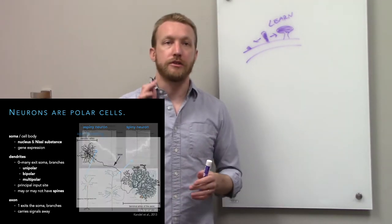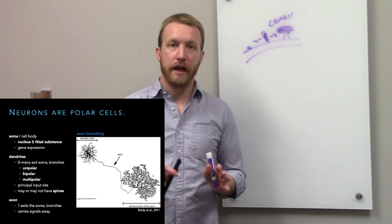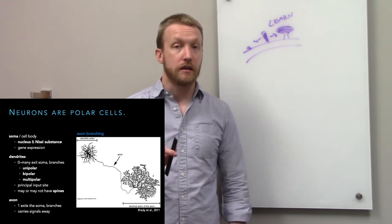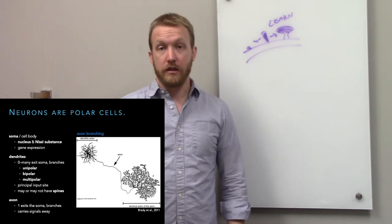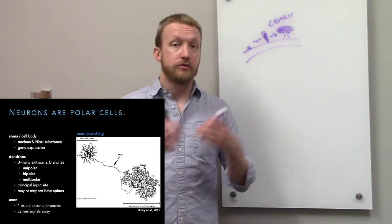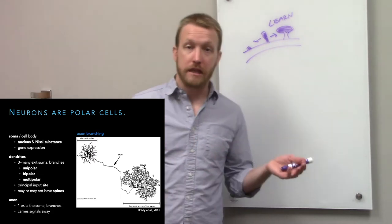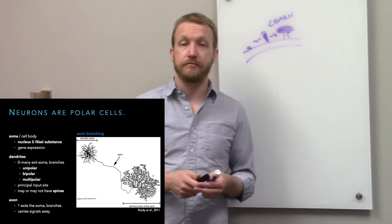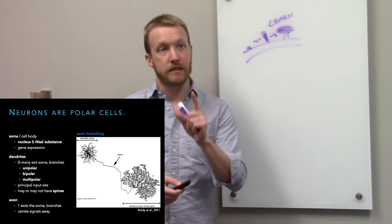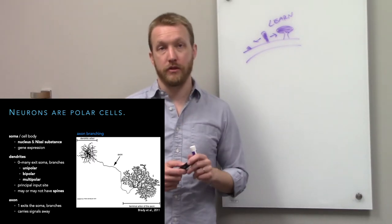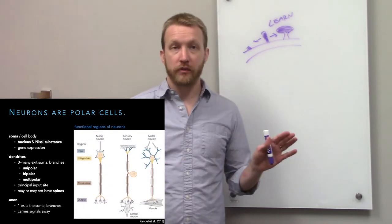Just like dendrites branch, so do axons. Every neuron only has one axon, but that axon can branch extensively — it can hit one part of the brain, two parts, one cell, or many cells. Just because there's one axon doesn't mean we only hit one target.